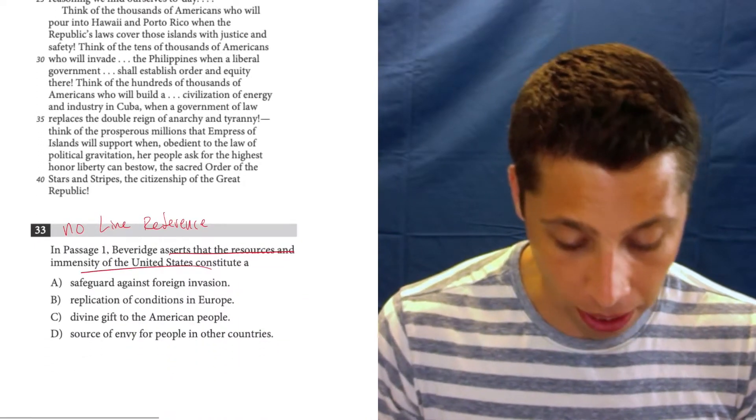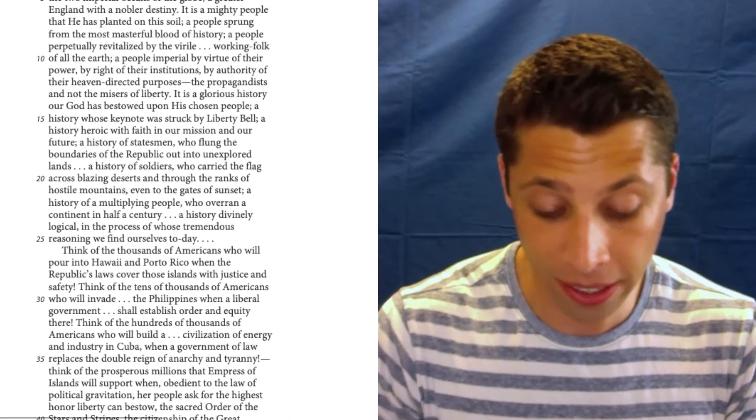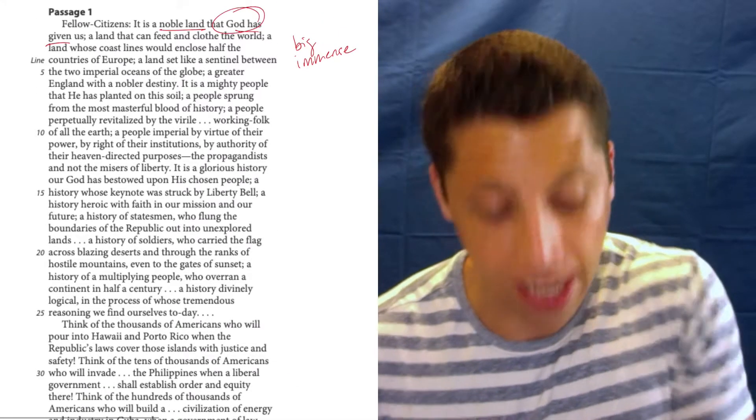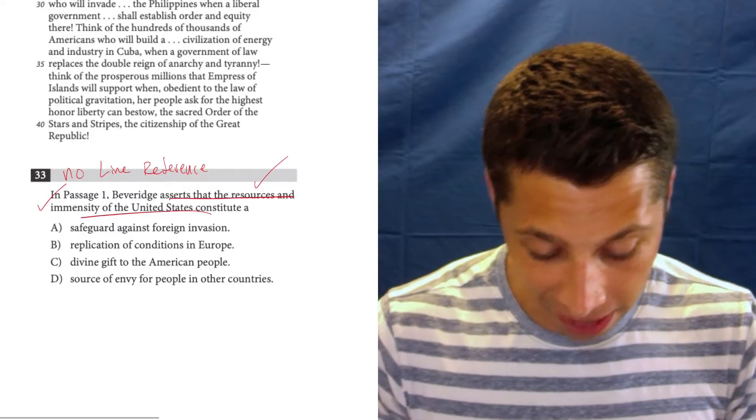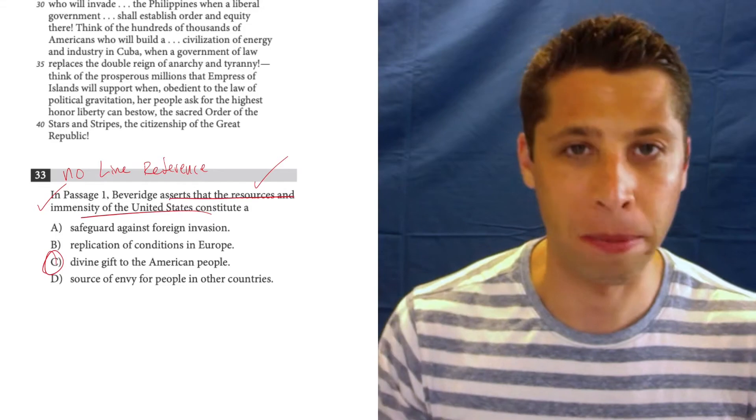That seems like it checks off a lot of boxes—talks about the resources, feeding and clothing, and how big it is. And what does it say? It says that God has given it to us. So that matches perfectly with C, which is the answer: a divine gift to the American people.